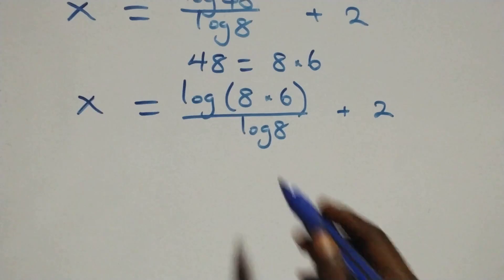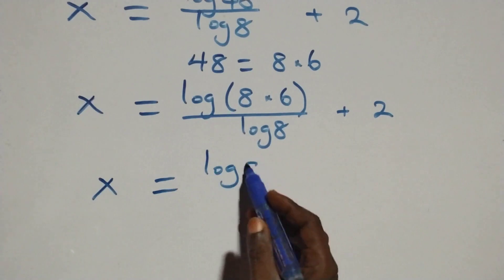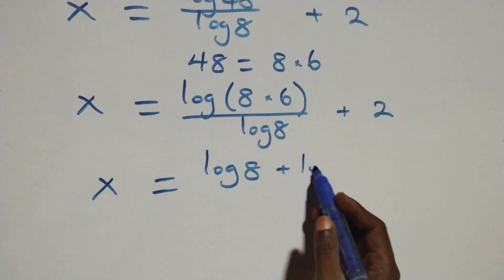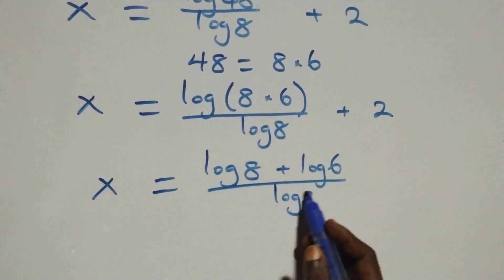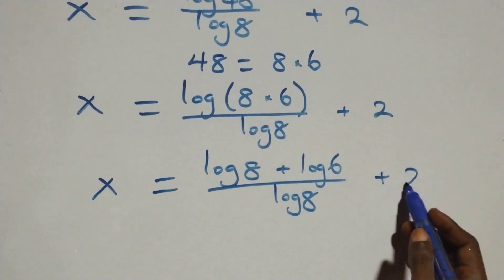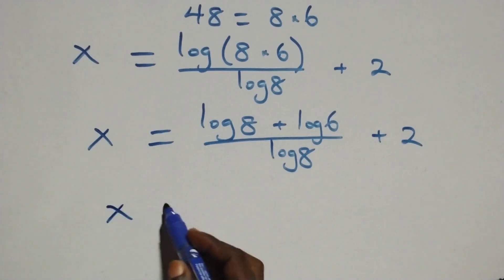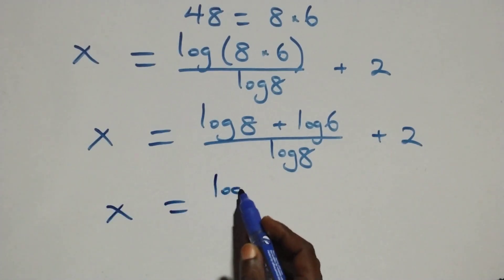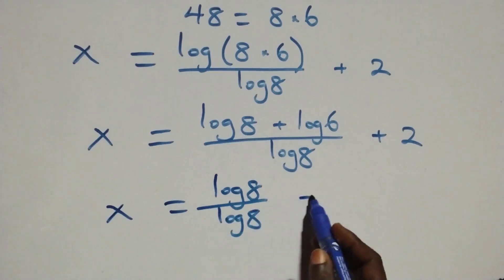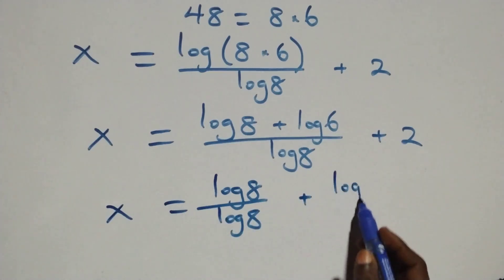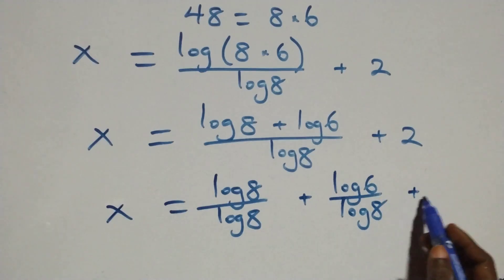The log 8 terms cancel to give plus 2. Also applying the logarithm product rule, we rewrite 48 as 8 times 6, giving x equals log 8 plus log 6 over log 8, plus 2. We then separate this into two fractions: x equals log 8 over log 8 plus log 6 over log 8, plus 2.